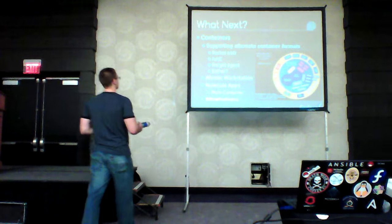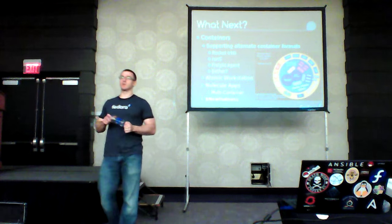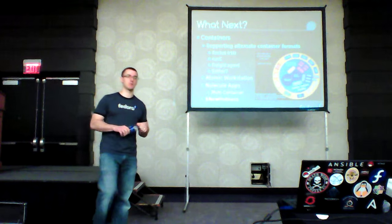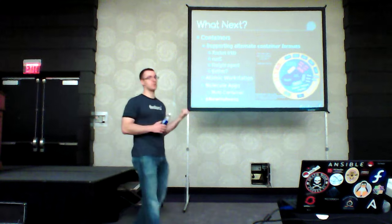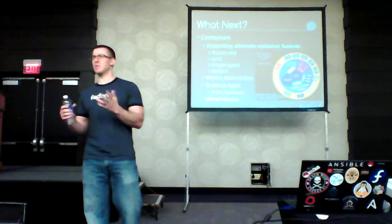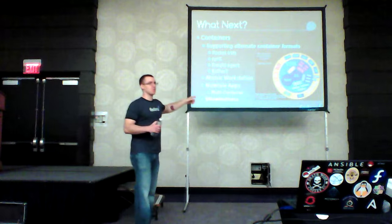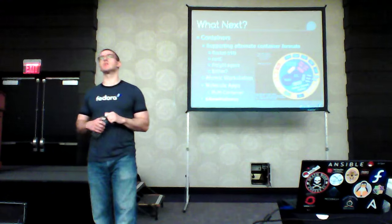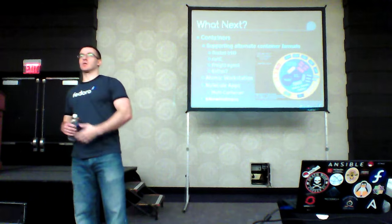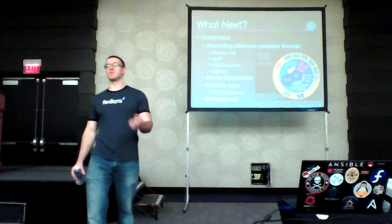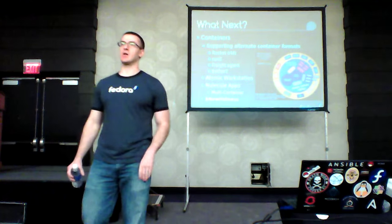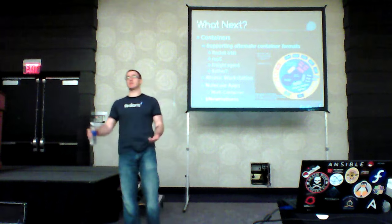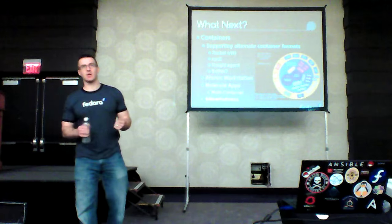So, what's next? Supporting alternate container formats is something we've had requests for and is on the roadmap. Rocket, RunC via the Open Container Foundation — and then Freight-Agent. If anybody's not familiar with Freight-Agent, it's a new delivery mechanism for container root filesystems that has systemd-nspawn on the back end, kicked off with systemd unit files. And then 'other' — we don't know what the next big thing is. There's new container technology popping up all the time.